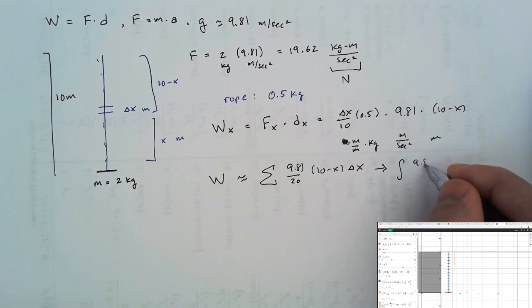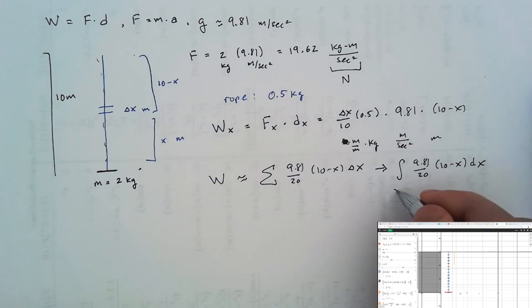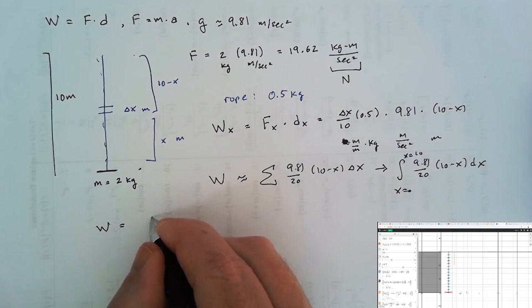Here we integrate from where x equals 0 to x equals 10 meters. The total work done in this case would be 9.81 over 20 times 10x minus 1 half x squared, evaluated between 0 and 10.